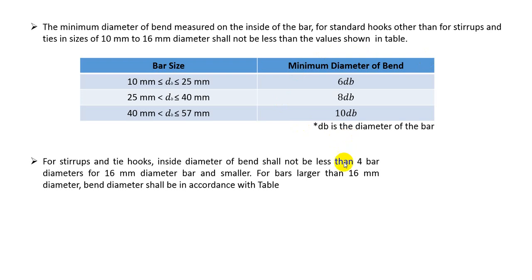But when our reinforcement are less than 16mm diameter, then we have to use minimum 4 bar diameters. We can reduce that more than that.